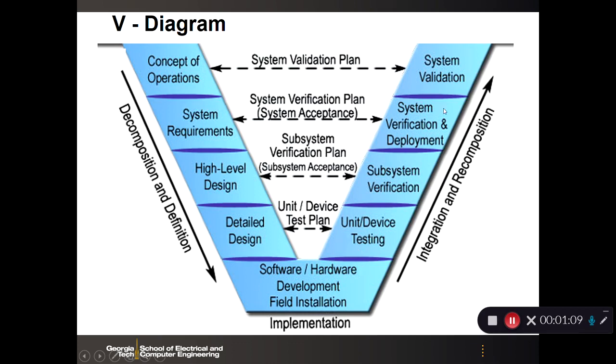Then we start working up the right-hand side of the V where we start testing, and this is where we do verification of the device. We do unit device testing, subsystem, and then system. Then at the very end, we do system validation where we now have the product that we think the customer wanted, and then we now compare it to really what the customer wants. We now have something to show the customer.